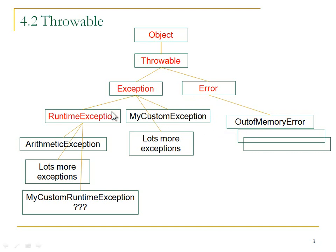Under Exception there's a special branch called RuntimeException, and anything that is a RuntimeException is something that might happen in any method. One of the things that is a RuntimeException is ArithmeticException. When we did that divide by zero, the JVM created an instance of ArithmeticException and threw that object. No one caught it, so the flow of control went back up - when the main method ended the whole program ended - and the error message was printed on the console.